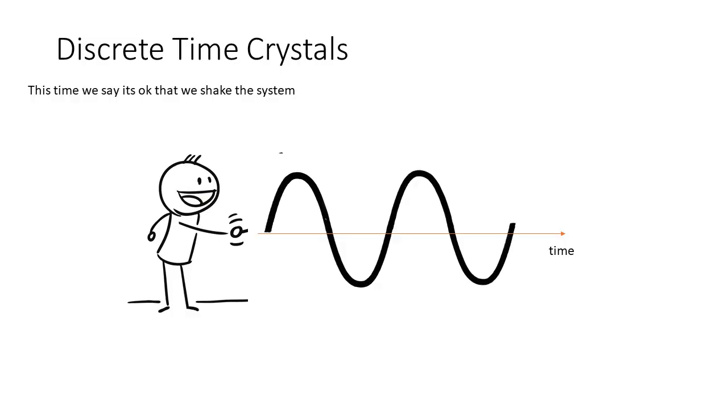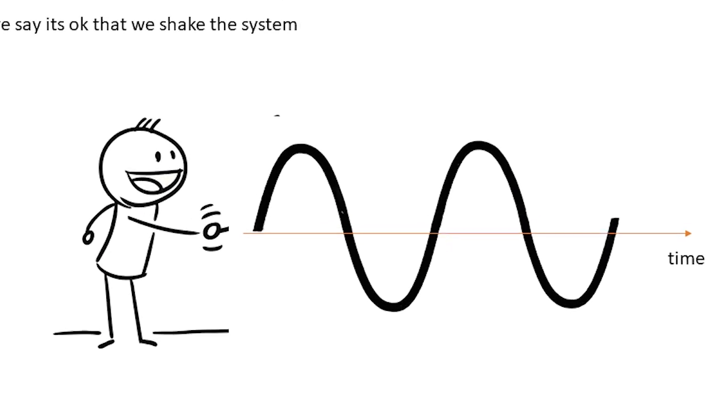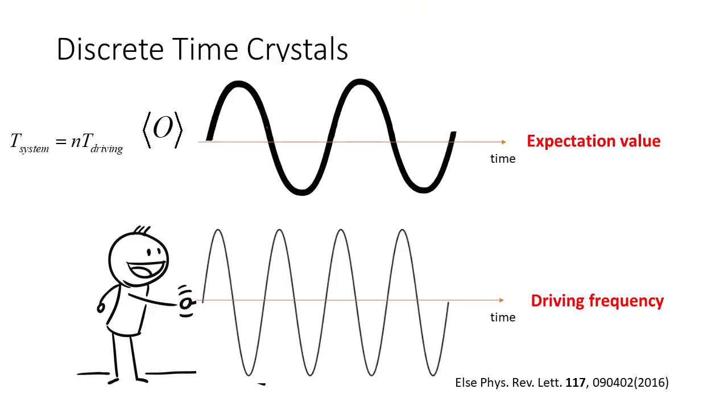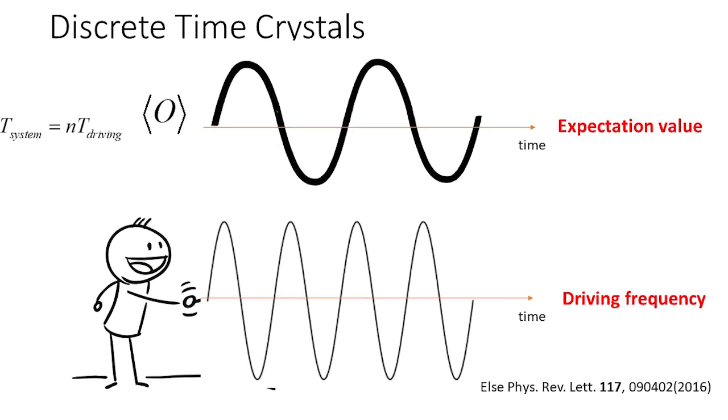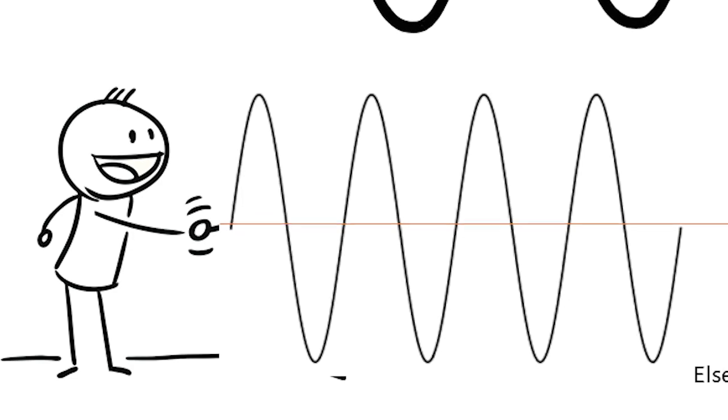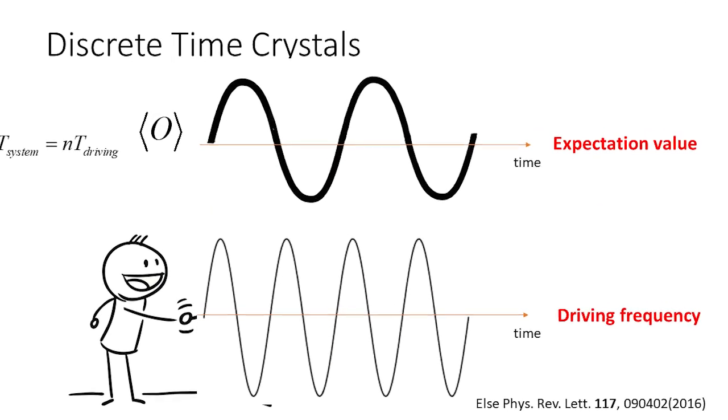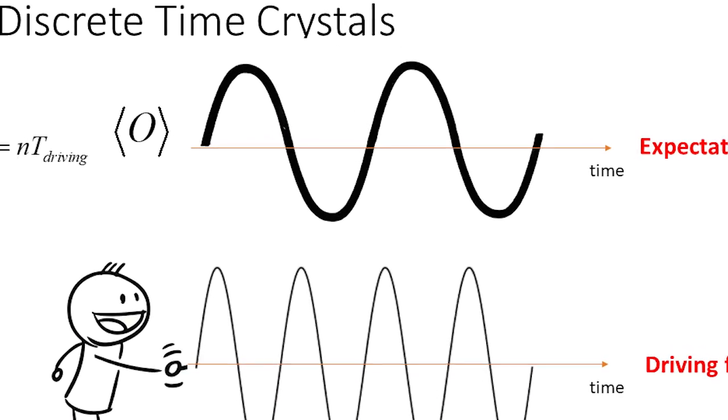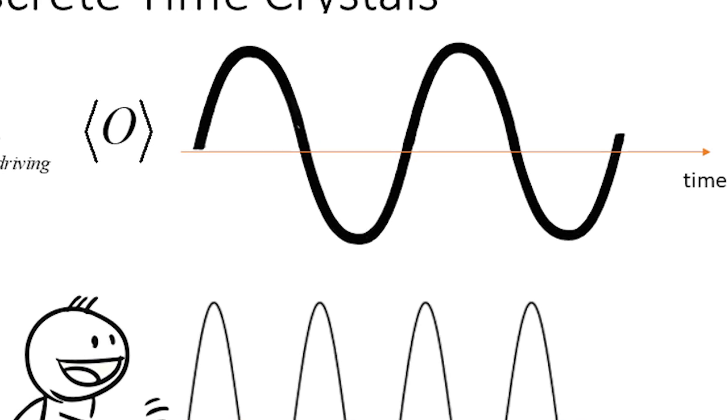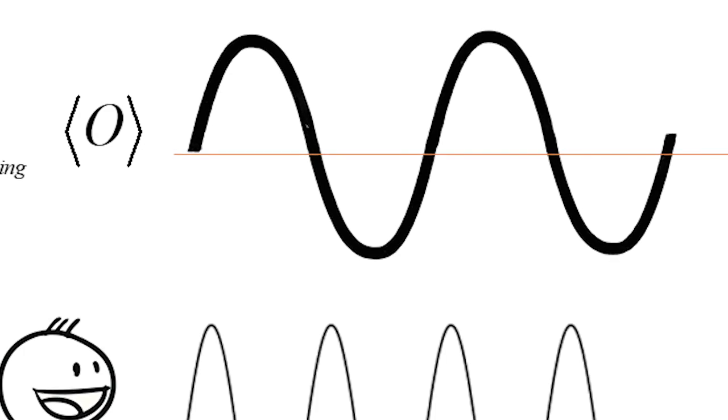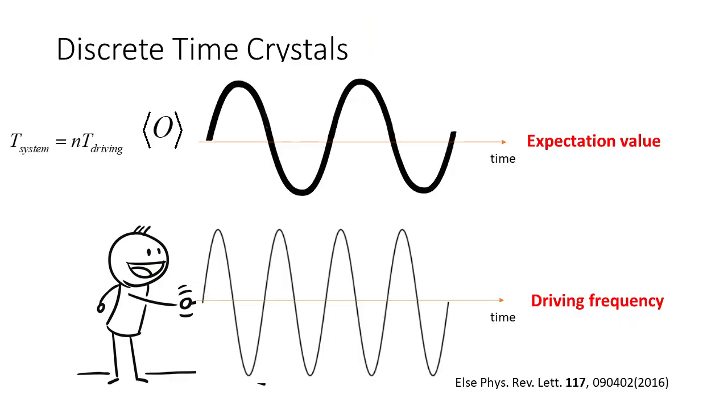But what people are talking about more these days are actually discrete time crystals, and this time we say that it's okay that we are going to drive the system. We're going to actively oscillate the system in some way. But then in that case, how do we have this idea of spontaneous symmetry breaking? In this case, we have a slightly different idea. If we are driving the system at some frequency, say with period T, then if the system responds with a different frequency to the driving frequency, then the system is responding with a frequency that you didn't put in there. If you didn't put that frequency in there, then it spontaneously came up with this different frequency of oscillation.